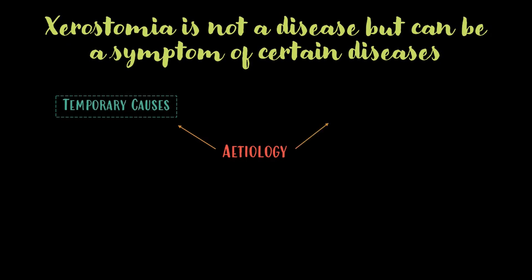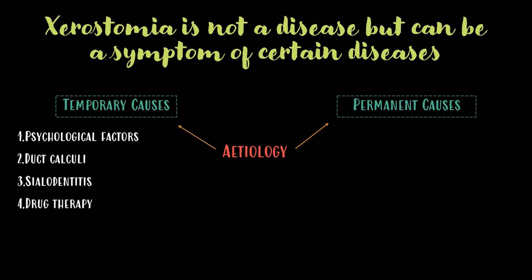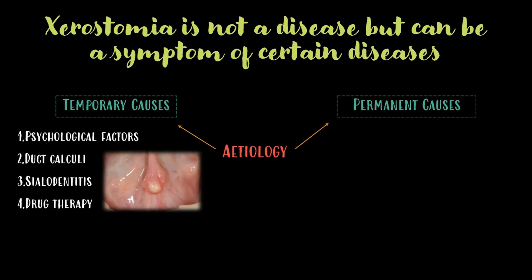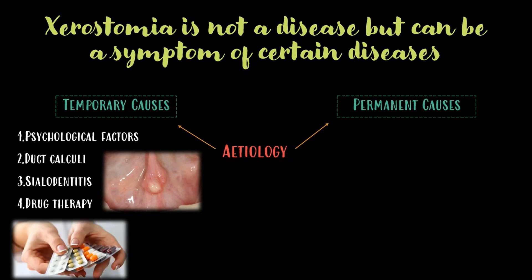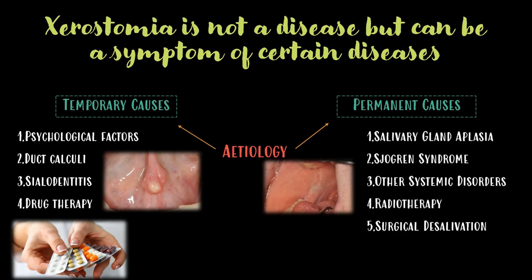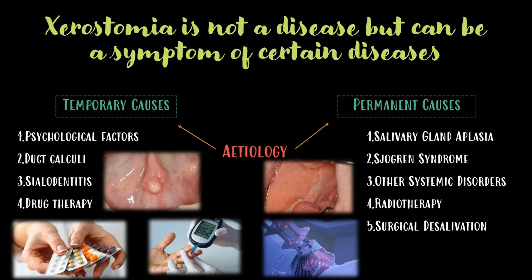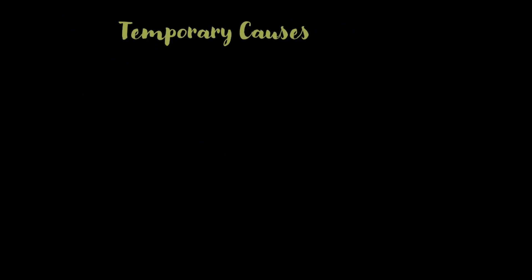Its etiology may be studied under two headings: the temporary causes and the permanent causes. The temporary causes include psychological factors, duct calculi, sialadentitis, and drug therapy. The permanent causes include salivary gland aplasia, Sjögren's syndrome, other systemic disorders, radiotherapy, and surgical desalivation.